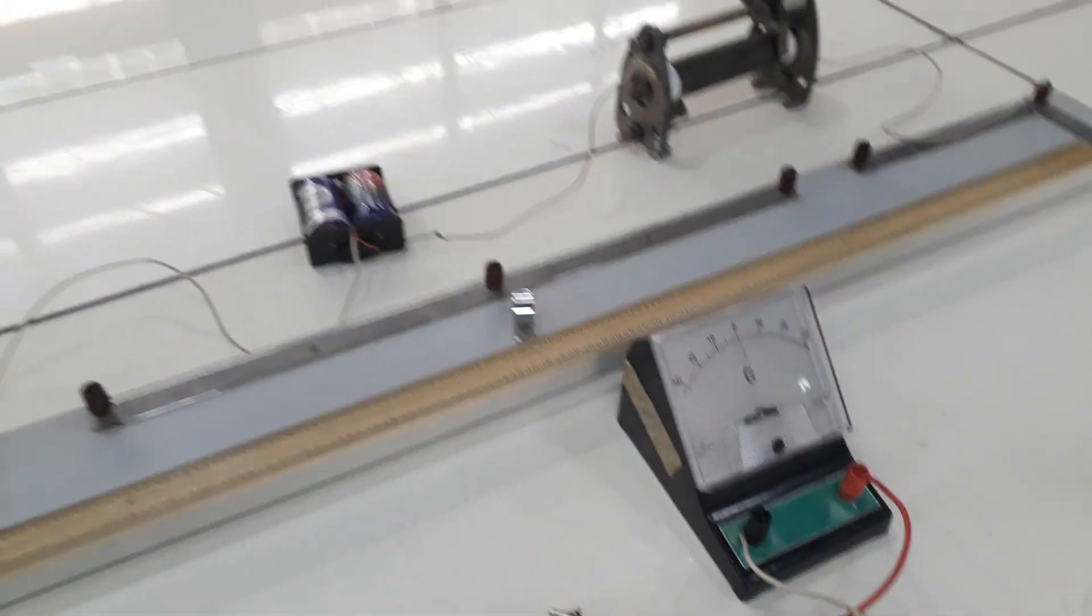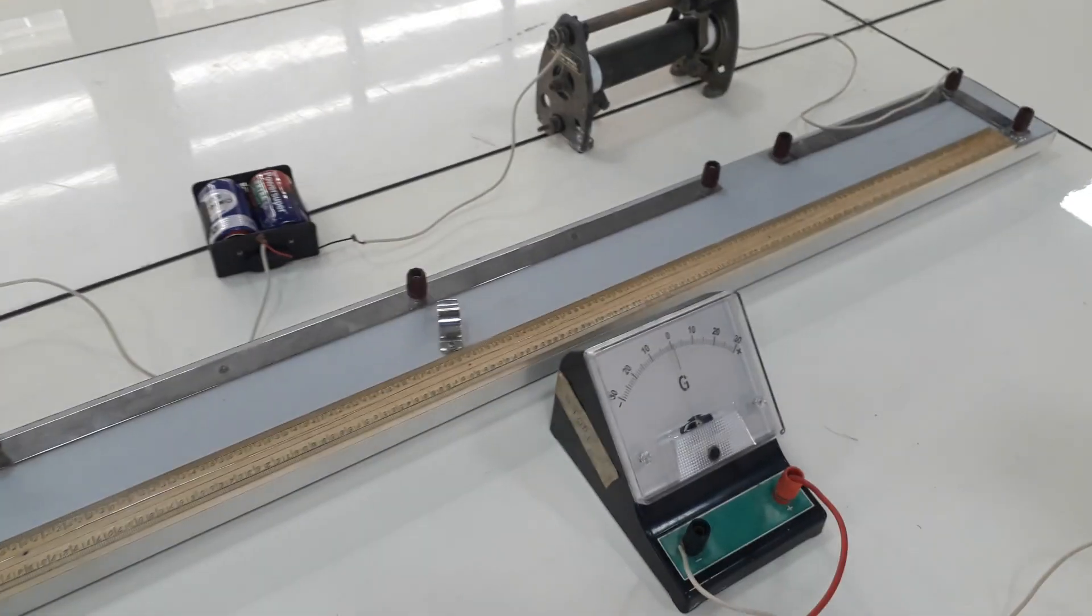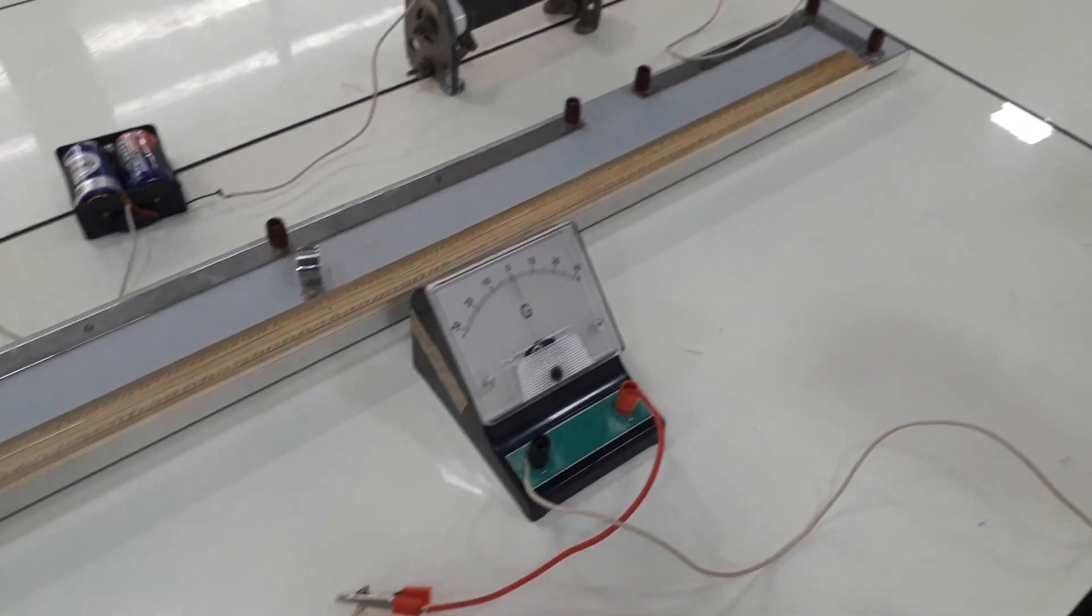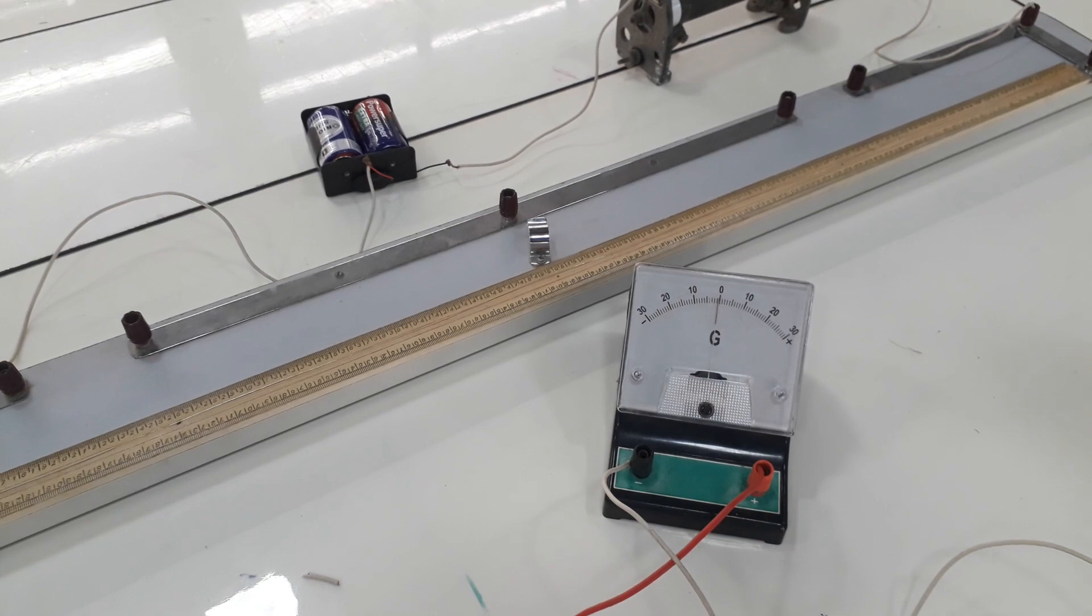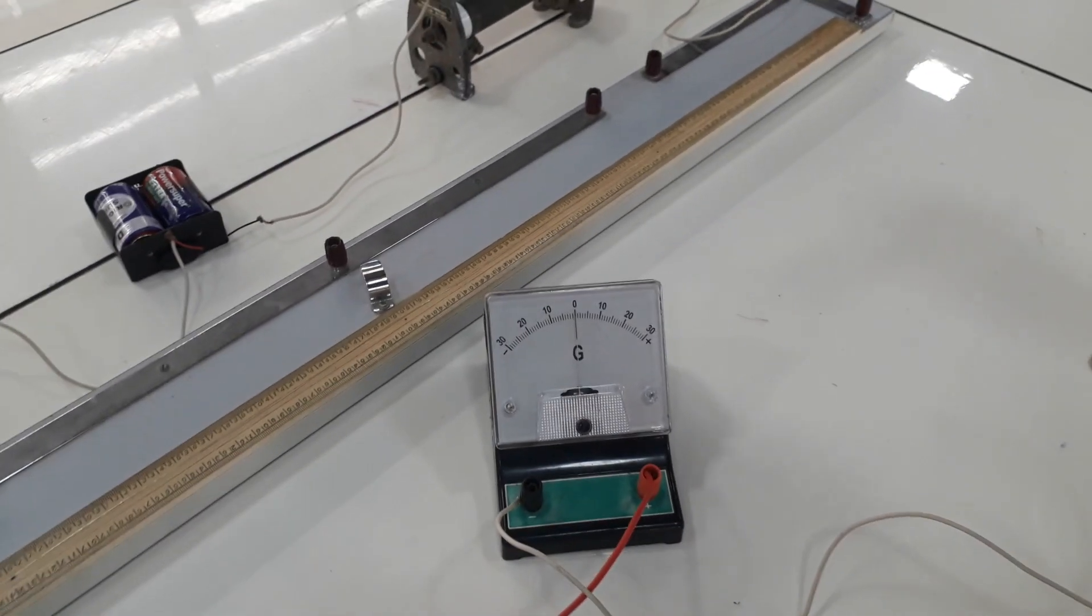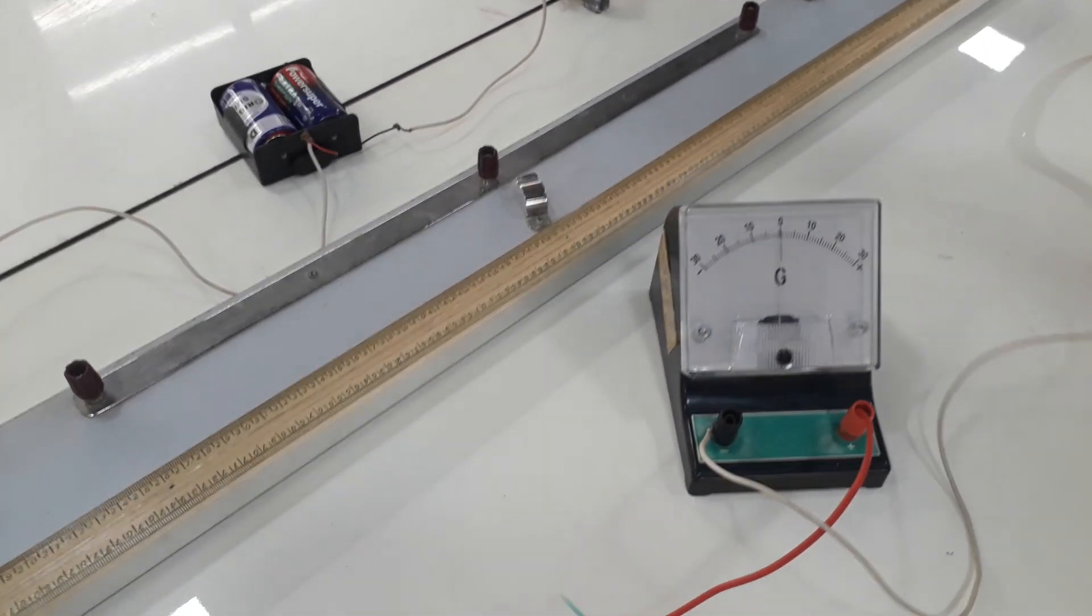The next thing I have to do is to determine where the galvanometer will be at the middle while I touch the Constantin wire. Let's see how it goes.